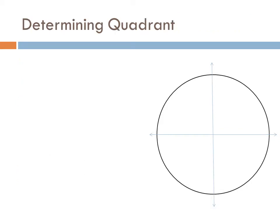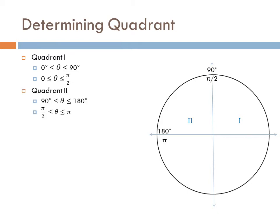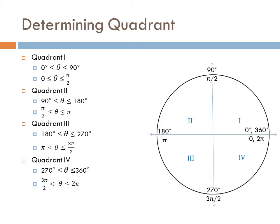You saw in the previous slides that absolute values get repeated quite a bit — only the signs change. Because of that, mathematicians have broken the unit circle into four quadrants. Quadrant 1 is angles between 0 and 90 degrees, or 0 and pi over 2. Quadrant 2 is between 90 and 180 degrees, or pi over 2 to pi. Quadrant 3 is 180 to 270 degrees, or pi to 3 pi over 2. And quadrant 4 is from 270 to 360, or 3 pi over 2 up to 2 pi. We need to memorize these four values — both the degrees and the radians.